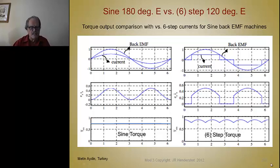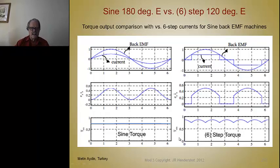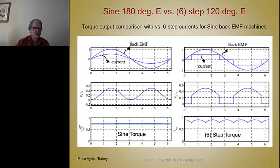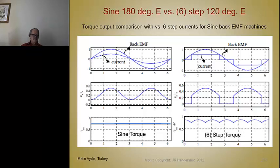Here's another picture showing what the torque looks like. With a six-step drive and square-wave current against sinusoidal back EMF, the torque per phase looks like this, and commutated, you see a lot of torque ripple. Whereas if I have sinusoidal current and sinusoidal back EMF, the torque ripple is very low. That shows you why people want to have a sinusoidal back EMF when using a sinusoidal drive.